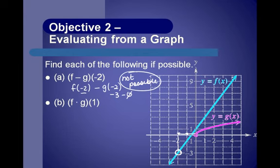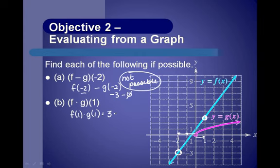Let's do f times g of 1. That means f of 1 times g of 1. f is the green function — on the green line where x equals 1, the y value is 3, so f of 1 is 3. g is the pink line — when x equals 1, the y value is 1, so g of 1 is 1. Therefore, f times g of 1 equals 3 times 1, which is 3.